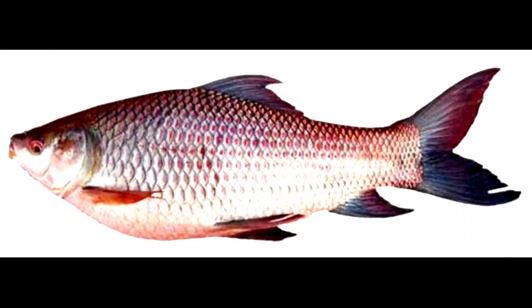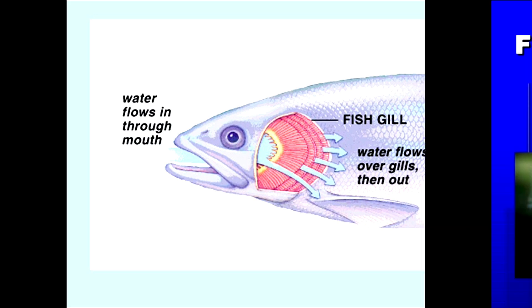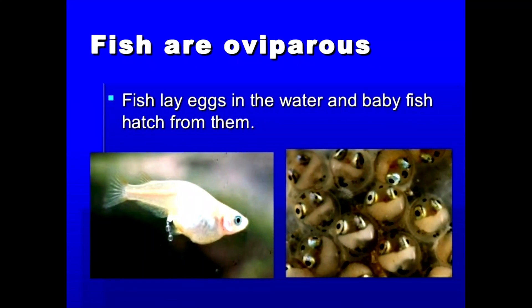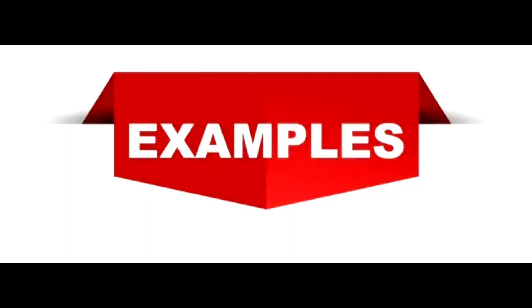Their body is long, streamlined and covered with smooth scales. They have fins for locomotion and gills for respiration. They are oviparous animals and have a two-chambered heart.